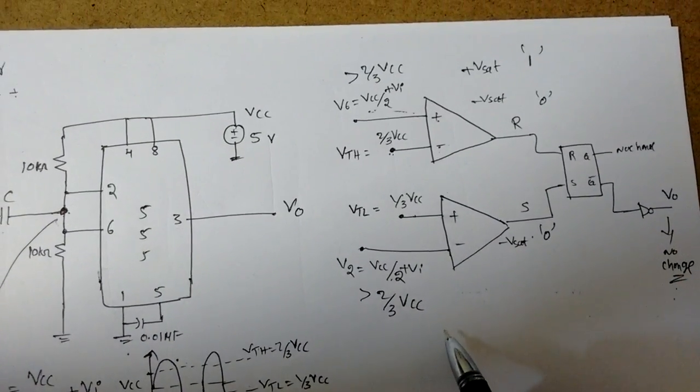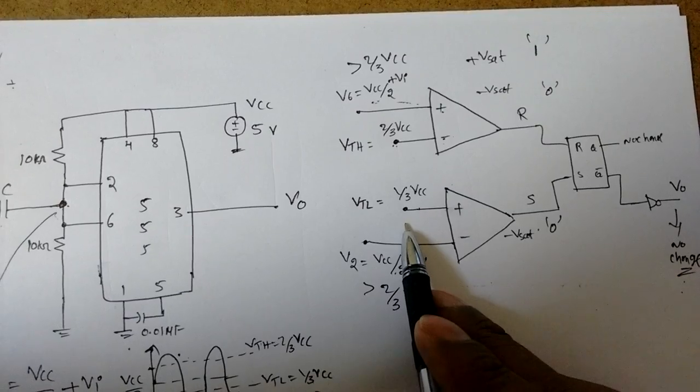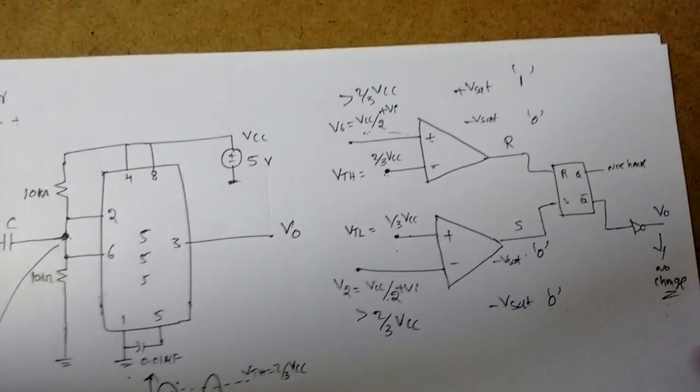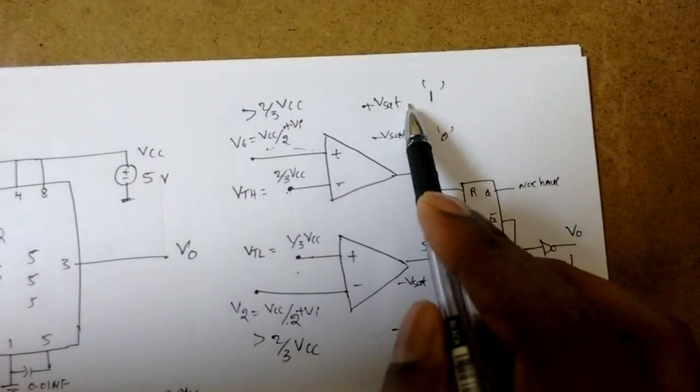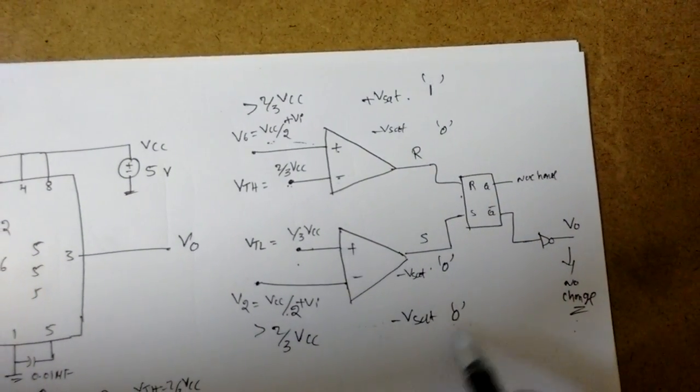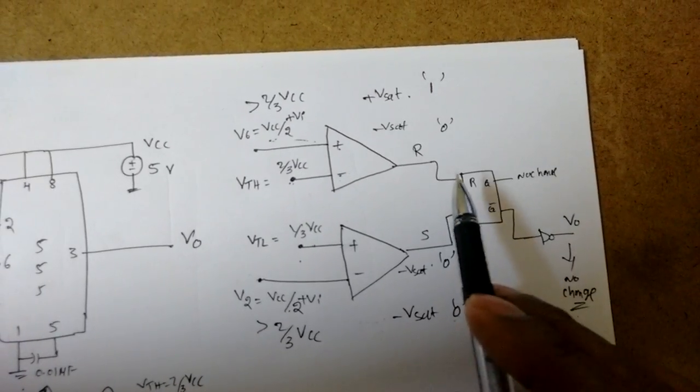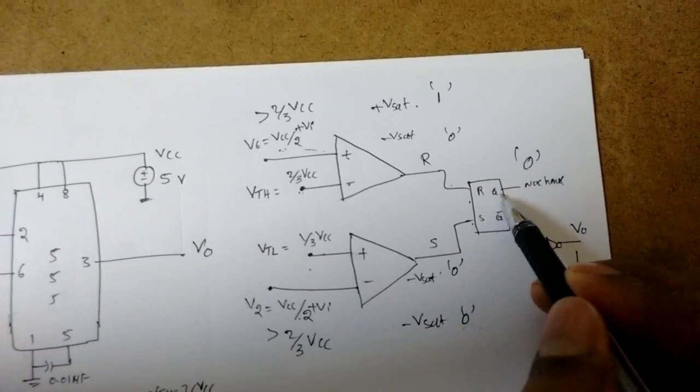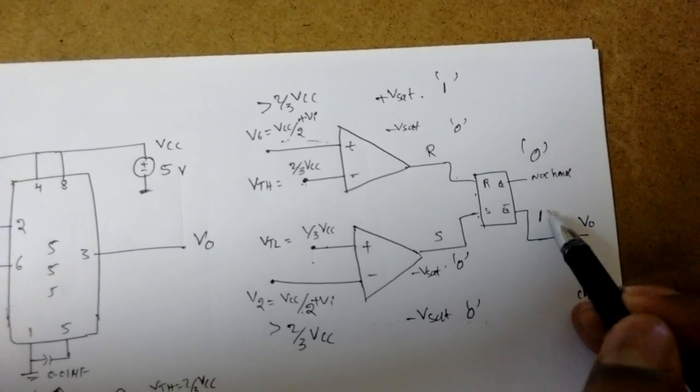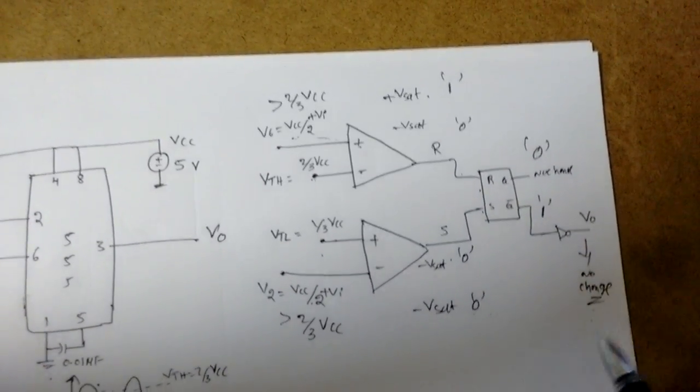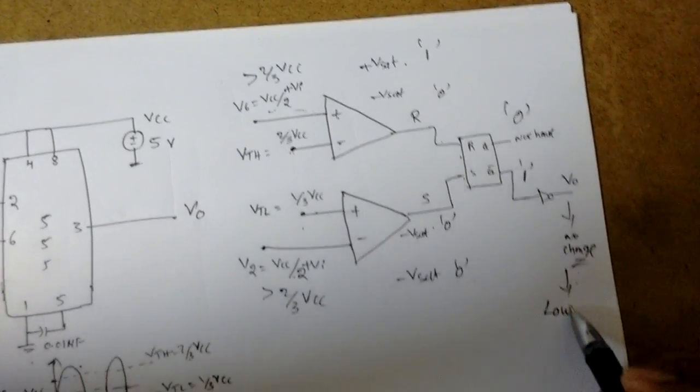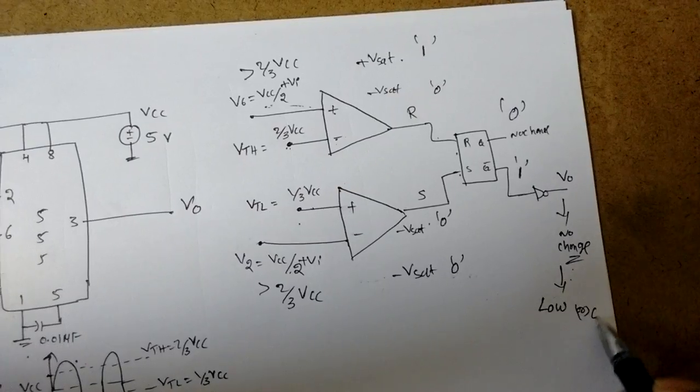What about the lower comparator? Minus is greater than positive, so again minus Vsat only, logic 0. Now we will see: logic 1 is given to R, logic 0 is given to S. So R is equal to 1 means output will be reset. That is Q will become 0. What about Q bar? That will become 1. So what is the V0 now? It will be 0, that is low or 0.